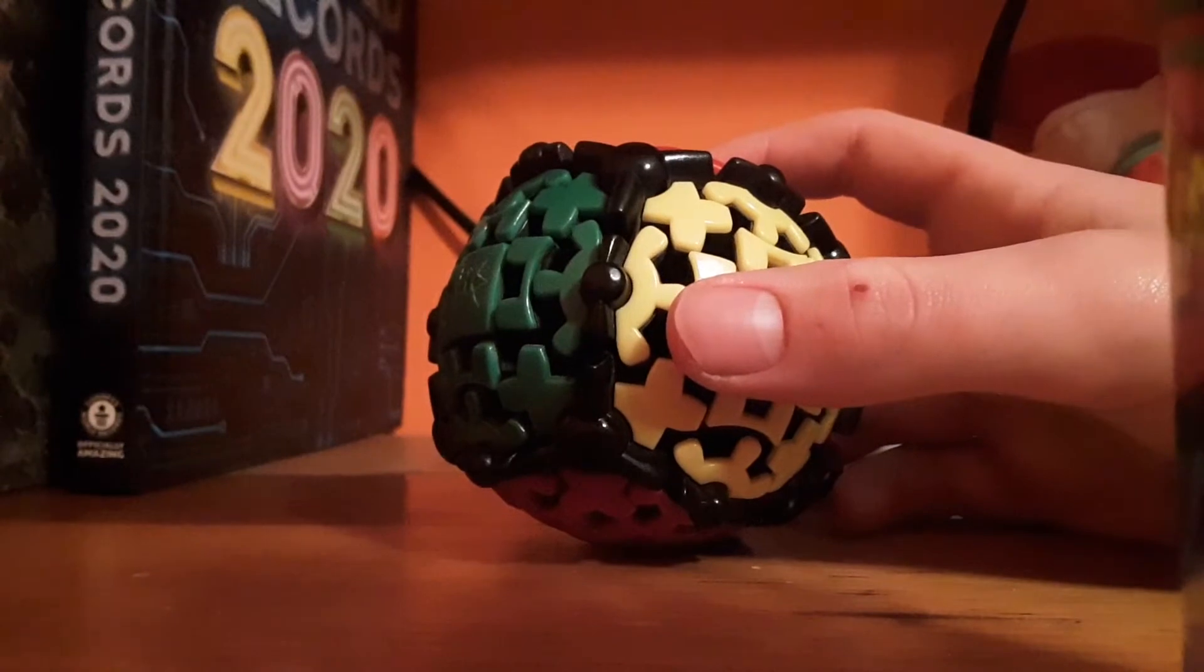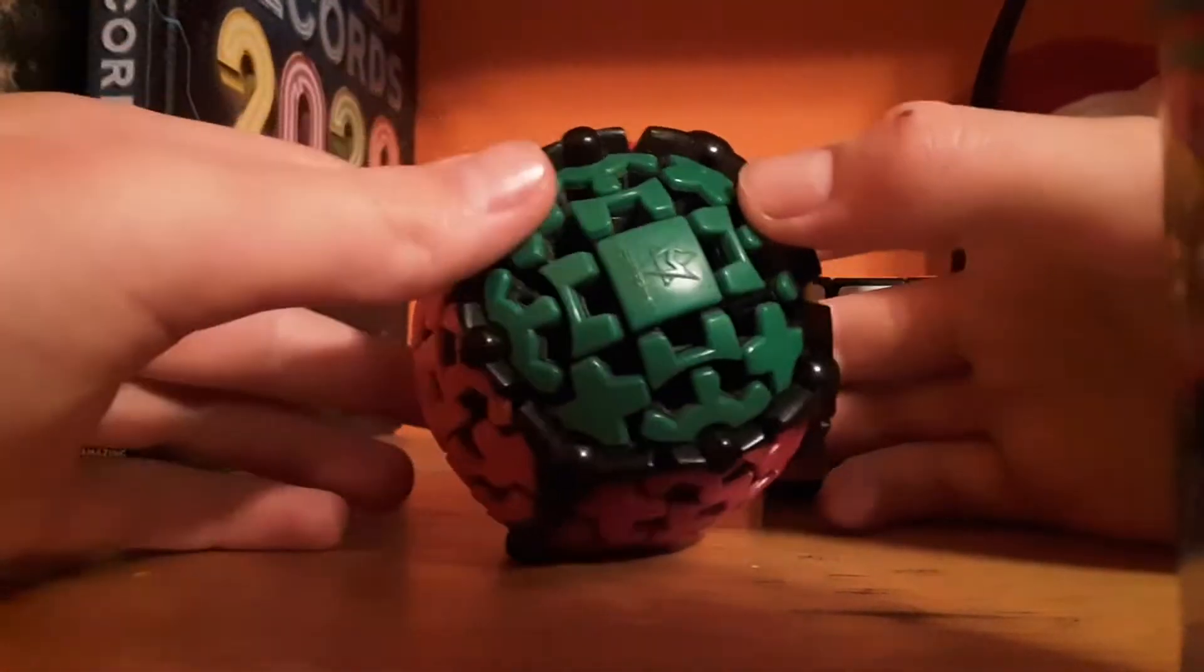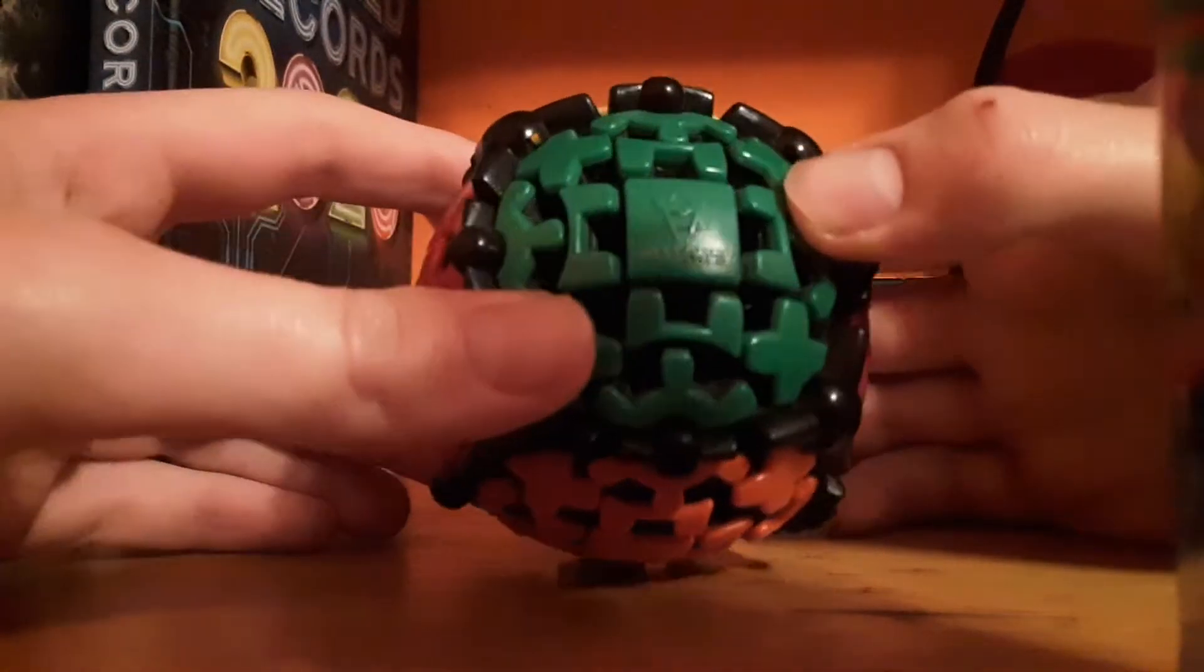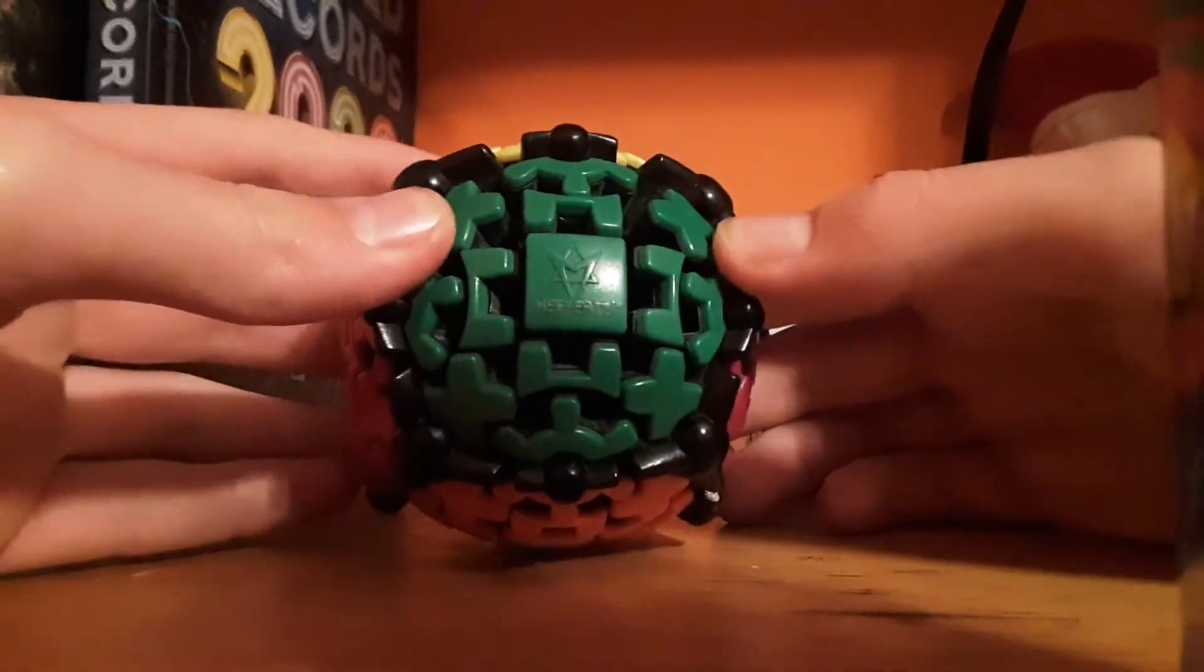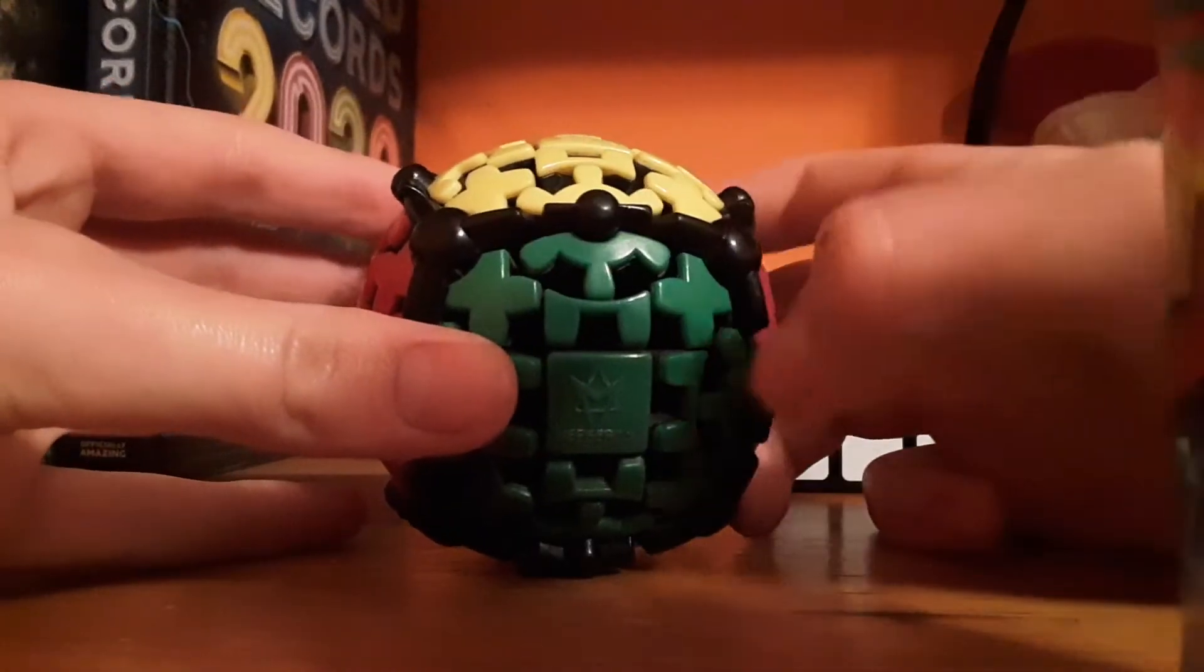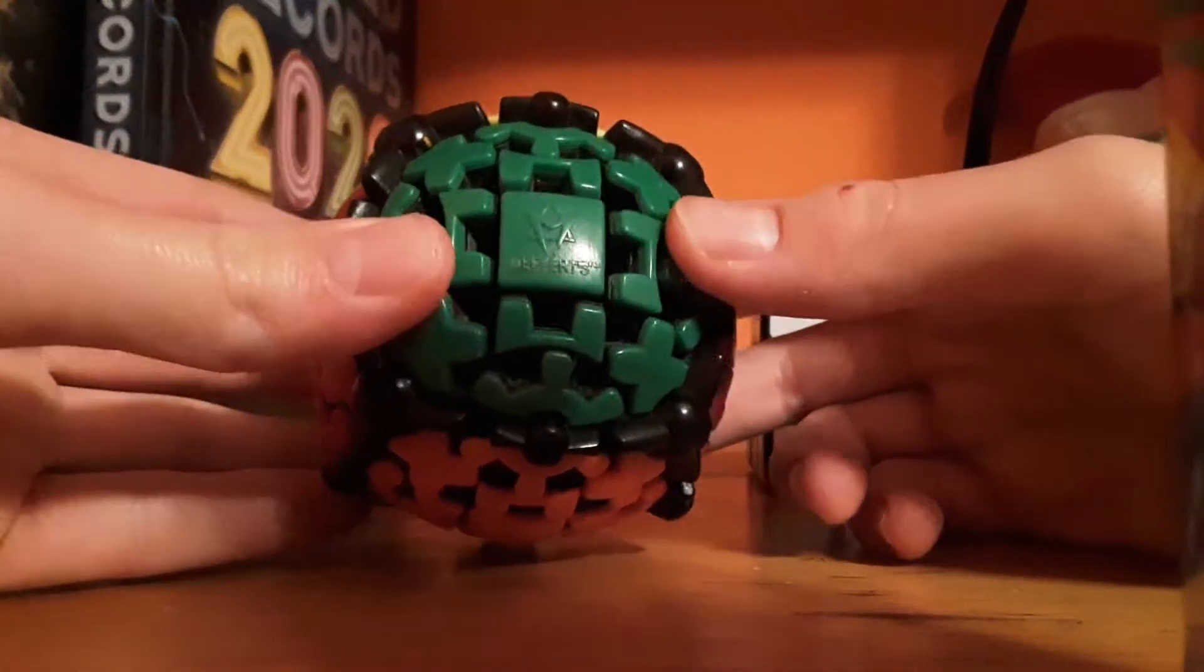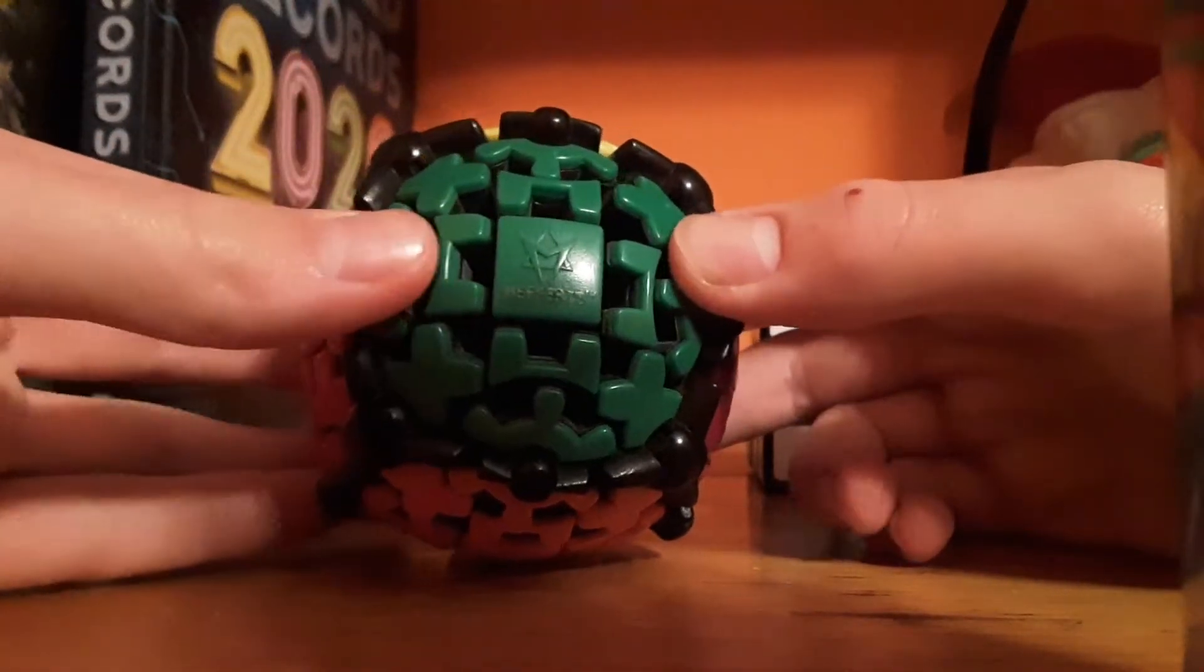We're first gonna talk about how it moves. Actually, no. Before we do that, I just want to talk about what this thing actually is. It is a gear cube, so it moves with gears. As you can see, this thing looks like a gear. It moves with gears. Which means that it is limited in its total combinations.